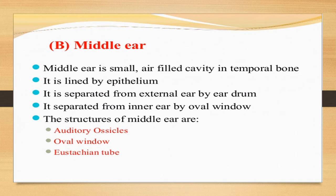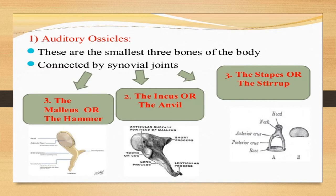The middle ear is a small air-filled cavity present in the temporal bone, lined by epithelium. It is separated from the external ear by the tympanum membrane and ends toward the inner ear at the oval window. The parts of the middle ear are the ear ossicles or auditory ossicles — three delicate bones: the malleus, incus, and stapes — the oval window, and the Eustachian tube.